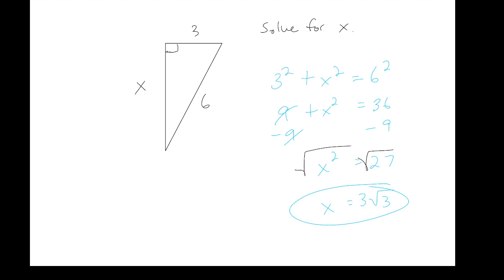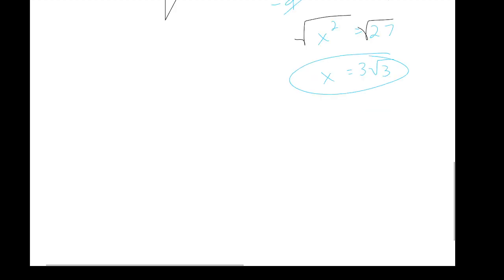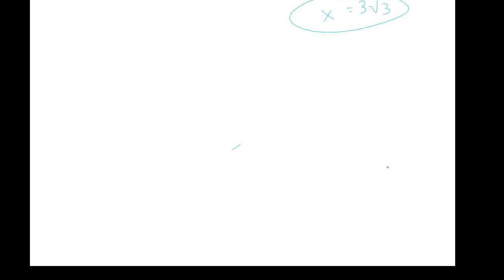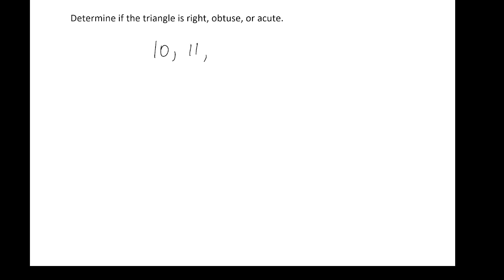This is a special right triangle that we are going to come back to in our next lesson, so don't forget about this. We're going to determine if a triangle with sides 10, 11, and 13 is right, obtuse, or acute.